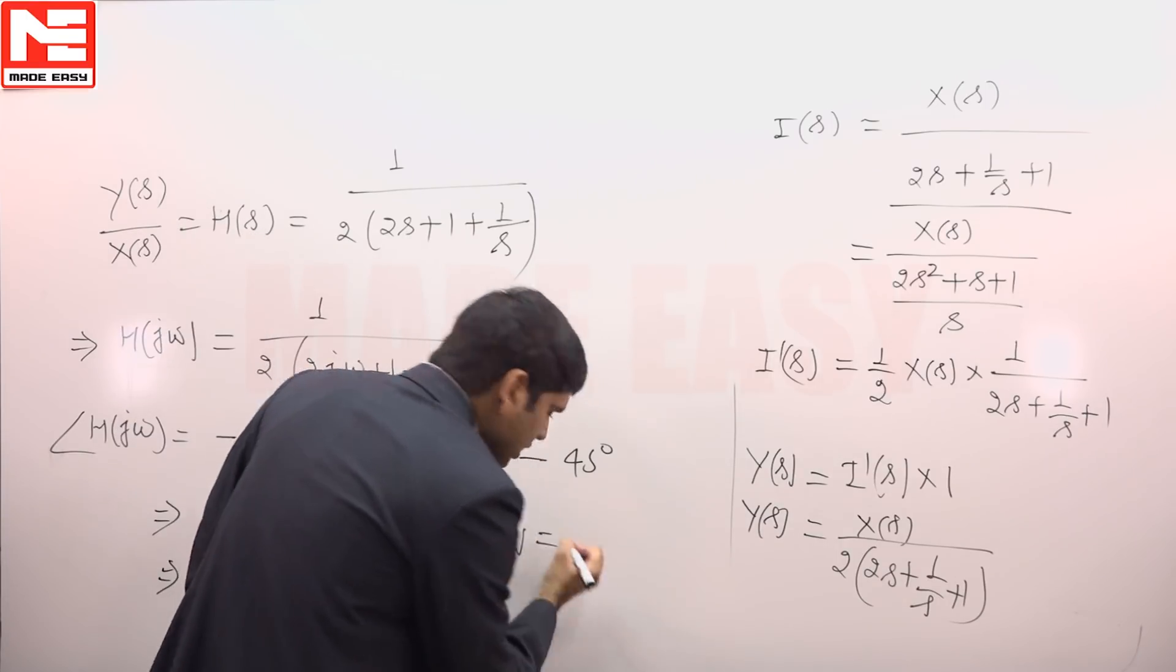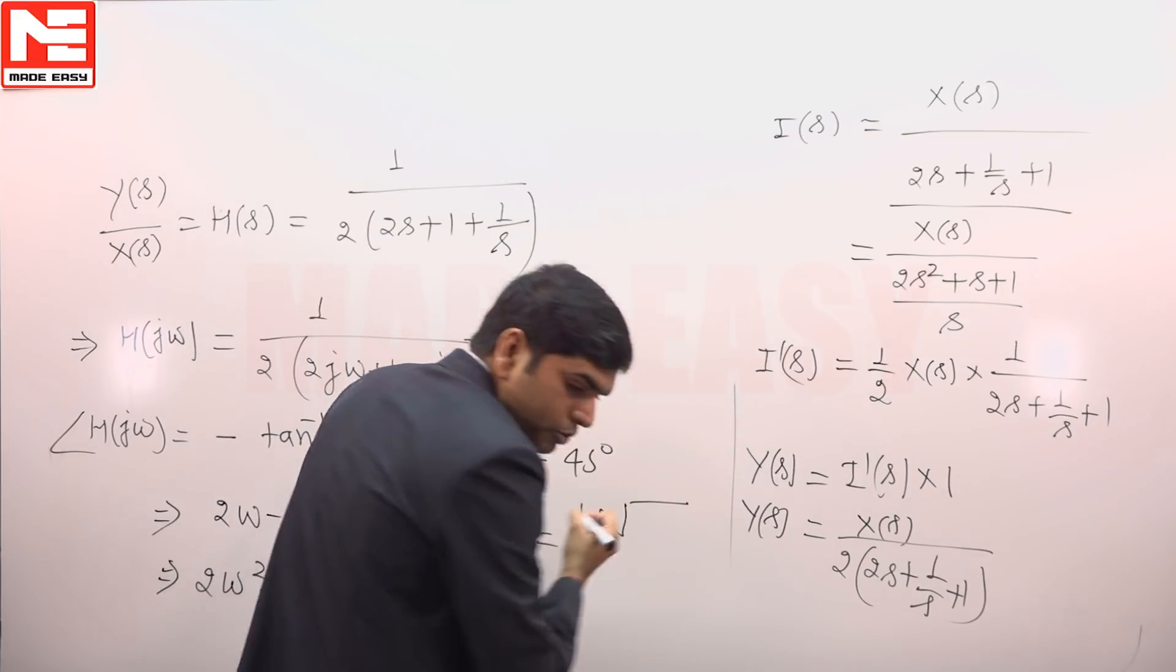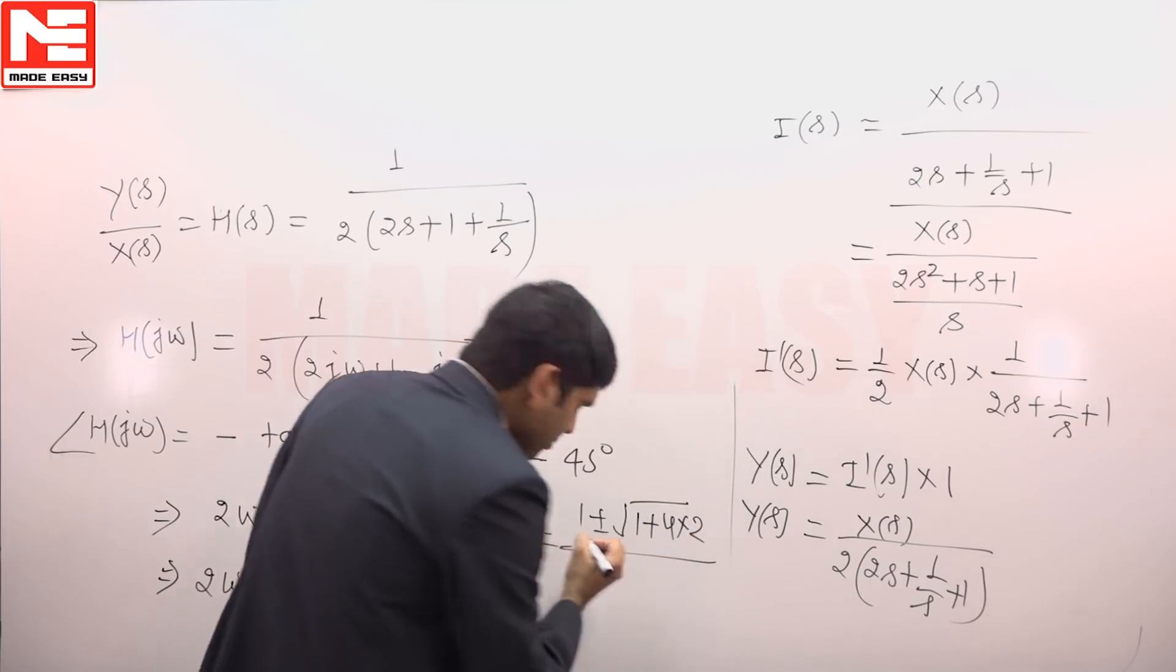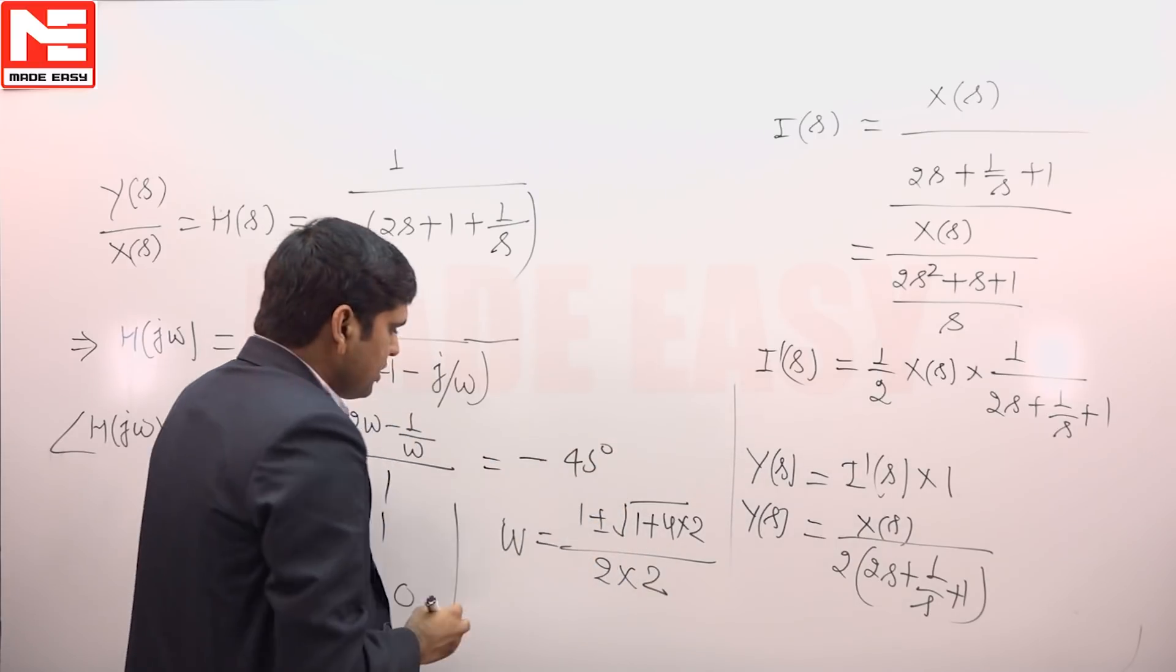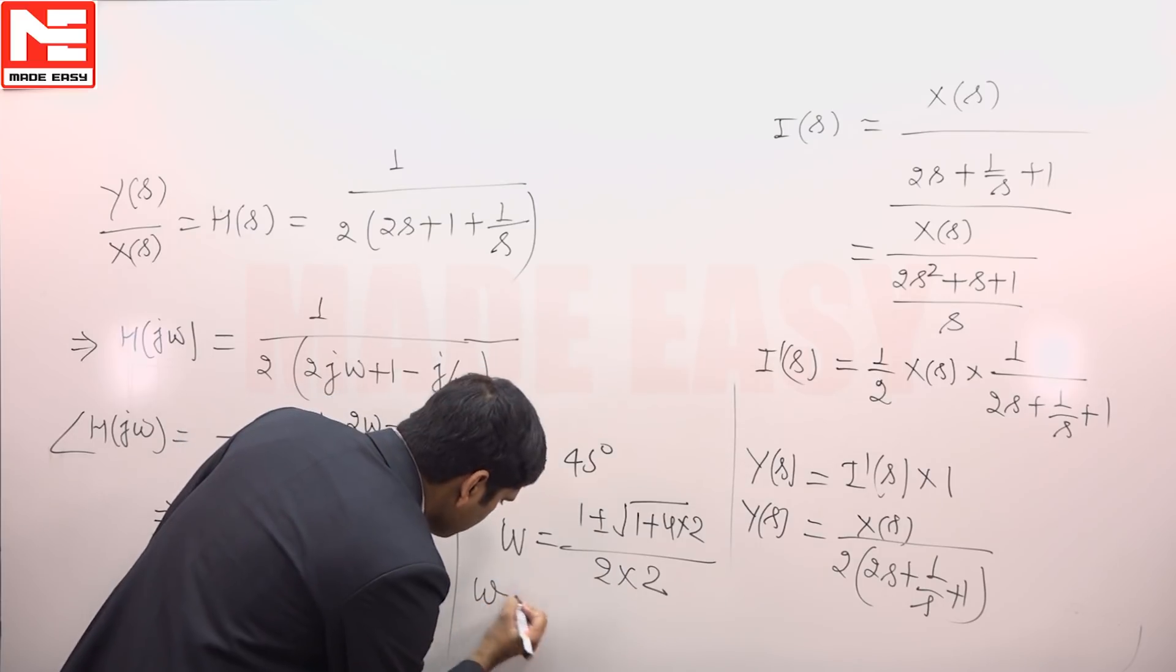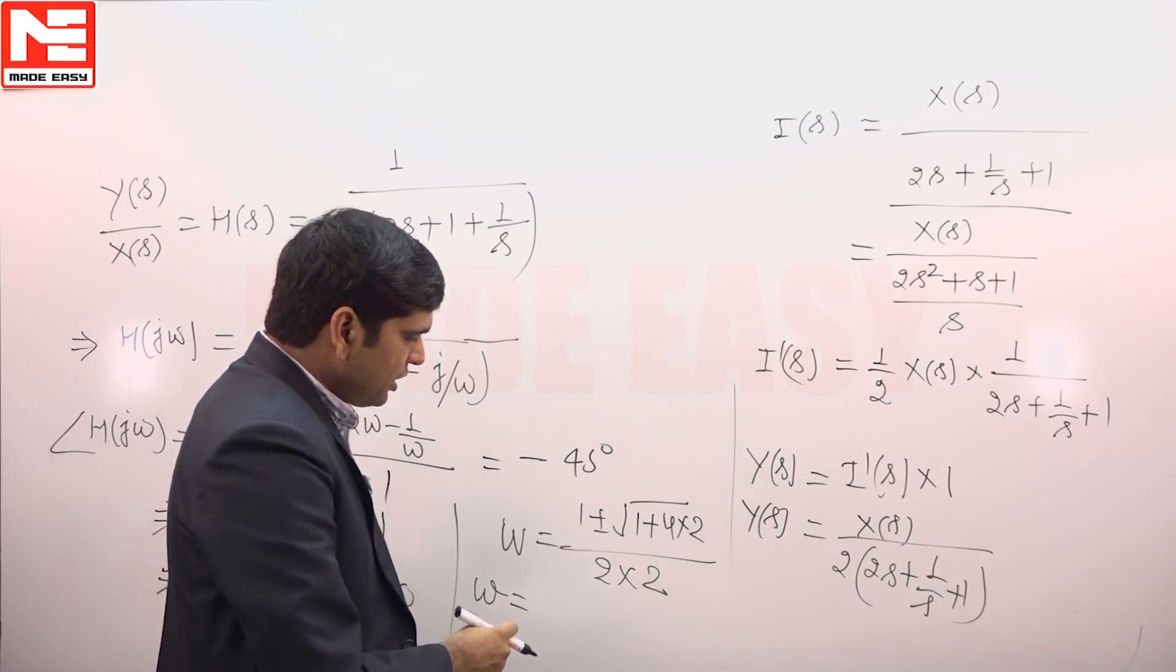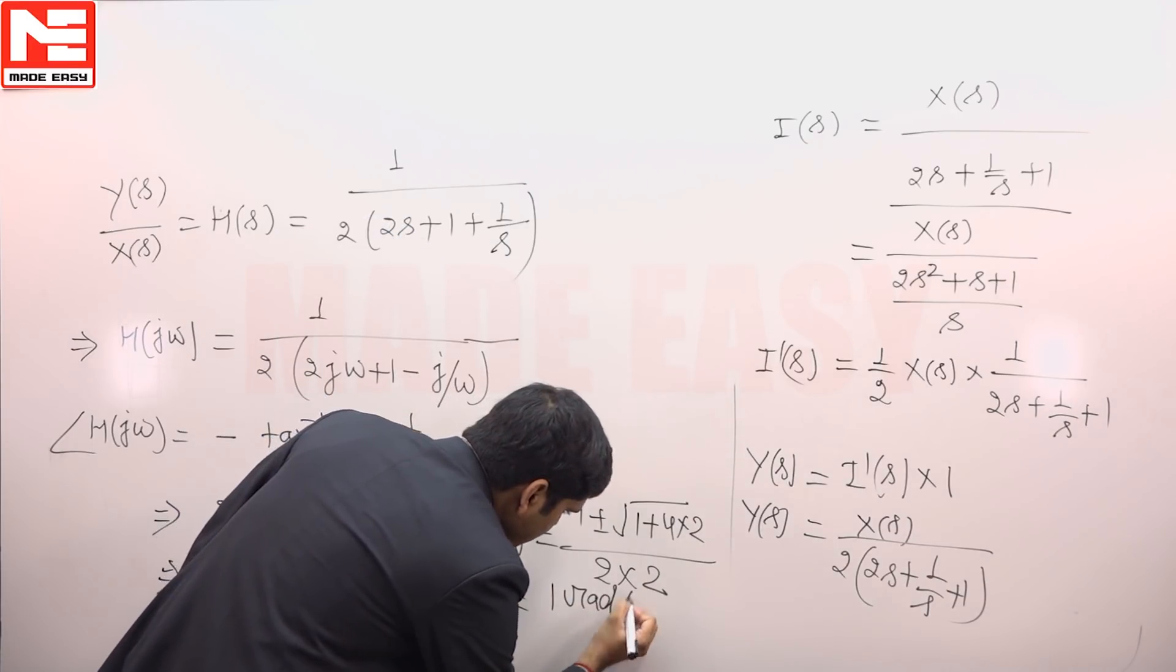On solving ω = (1 ± √(b² - 4ac))/(2a). So 1 + √(1 + 4×2) divided by 2×2. Negative frequency can be discarded. 1 + √9 divided by 4 will give us ω = 1 radian per second.